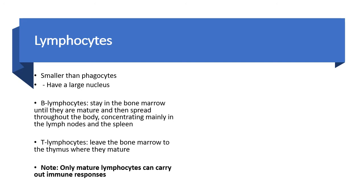Lymphocytes are smaller than phagocytes, and they also have a large nucleus. For the sake of this syllabus, we are going to focus on two types of lymphocytes: B lymphocytes and T lymphocytes, also referred to as B cells and T cells. The B cells stay in the bone marrow until they are mature, and then they spread throughout the body, concentrating mainly in the lymph nodes and in the spleen. The T cells leave the bone marrow and go to the thymus, which is where they mature. Always remember that only mature cells can carry out immune responses.